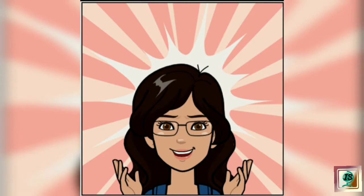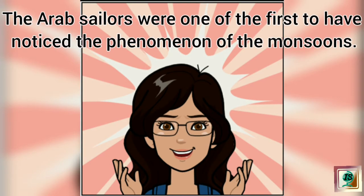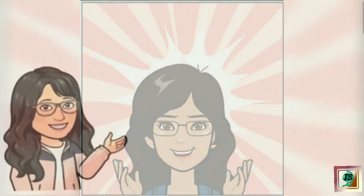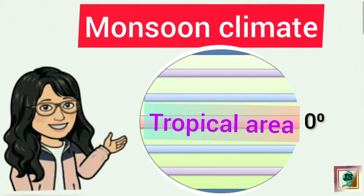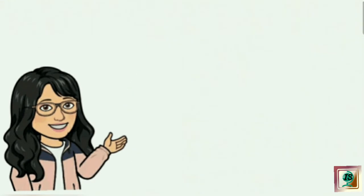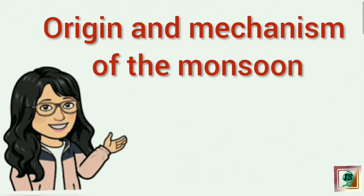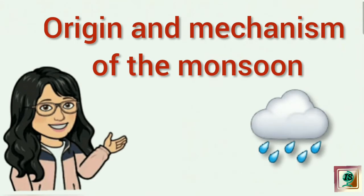The Arab sailors were one of the first to have noticed the phenomenon of the monsoons. The monsoons are experienced in the tropical area, roughly between 20 degree north and 20 degree south. Let us try to understand the origin and mechanism of monsoons.